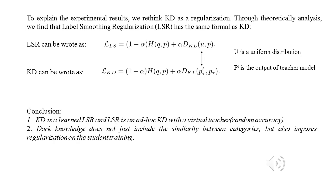So we can summarize that knowledge distillation is a learned label smoothing regularization and label smoothing regularization is an ad hoc knowledge distillation with a virtual teacher, which outputs a uniform distribution, so it has random accuracy. The dark knowledge does not just include the similarity between categories, but also imposes regularization on the student training.